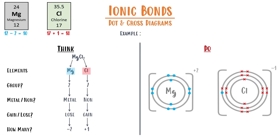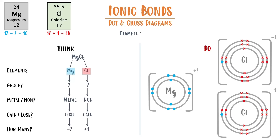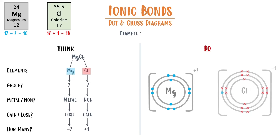Now we're not quite done. If we look back at that formula, we had MgCl₂, so we had 2 of those chloride ions. We can either draw the same one twice, or — which I think is a lot easier — you can just put a big 2 in front of those chlorides to represent that you have 2 of them. Both of these would be accepted on a GCSE test.